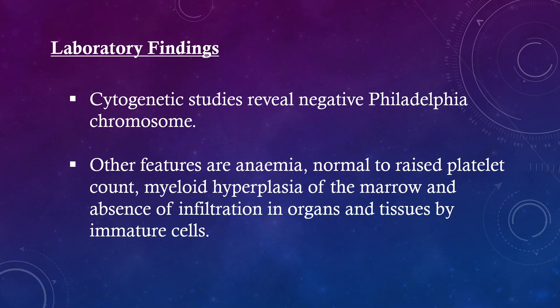Cytogenic studies reveal a negative Philadelphia chromosome. Other features include anemia, normal to raised platelet count, myeloid hyperplasia of the marrow, and absence of infiltration in organs and tissues by immature cells.